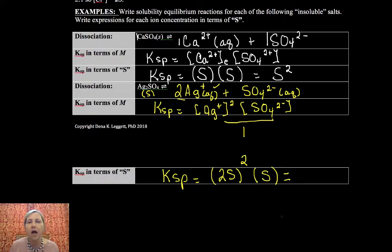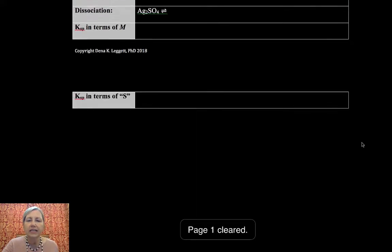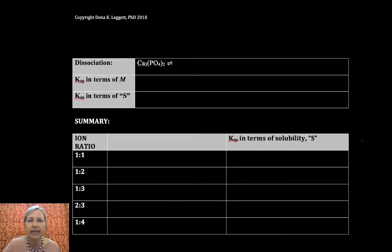Sulfate is one-to-one, so it's S. Most common, common mistake is you're going to forget to square your 2. So it's 2S squared. So it's 2S times 2S times S. So it's 4S cubed. So that's how Ksp would relate on that one.